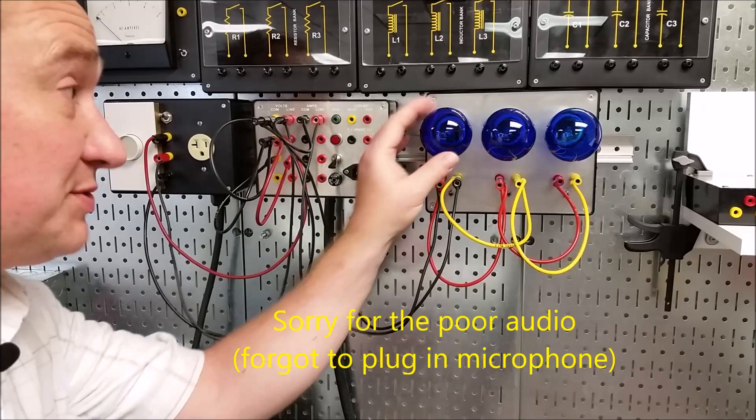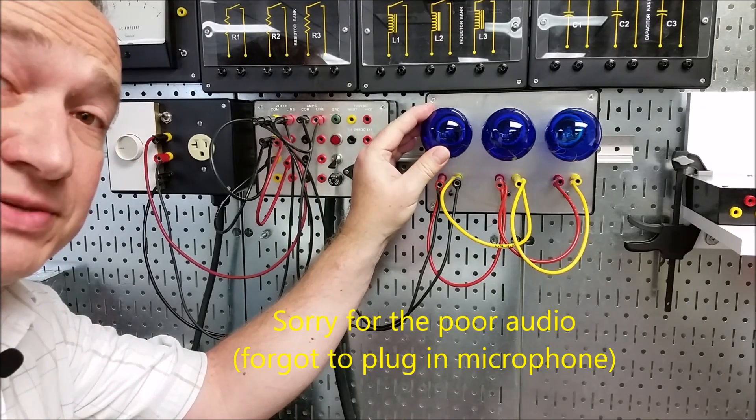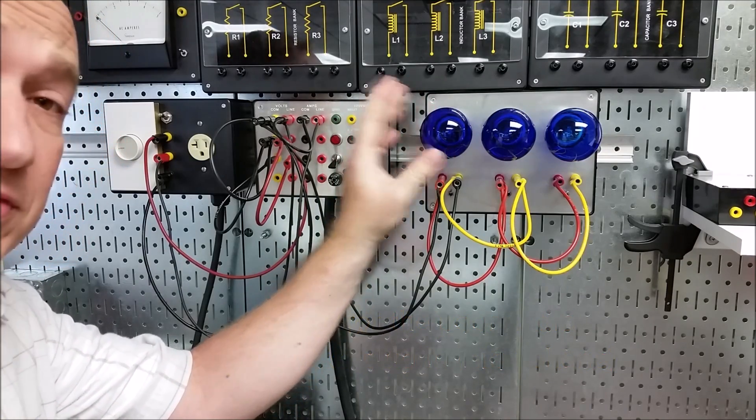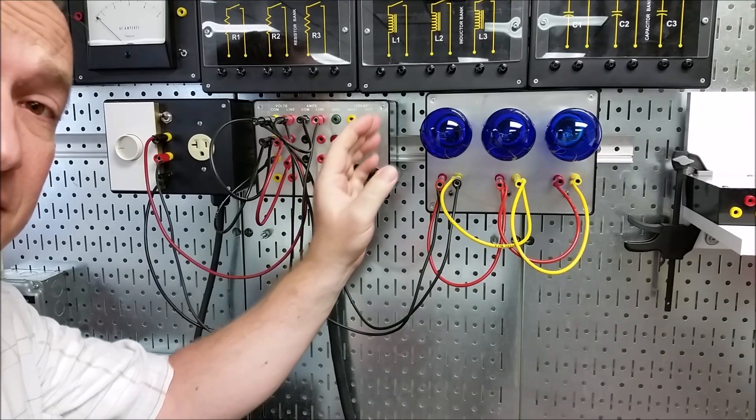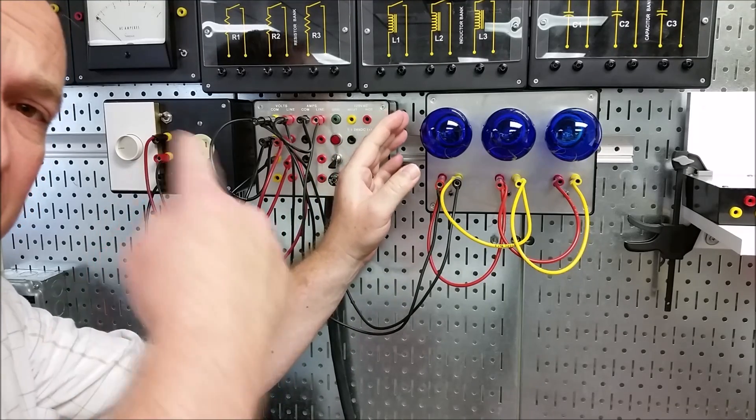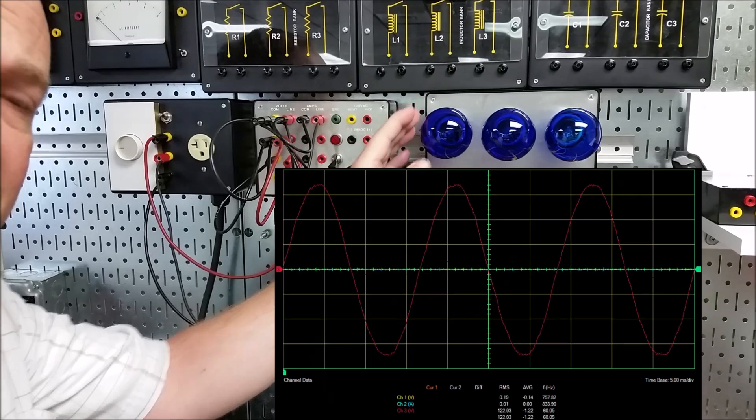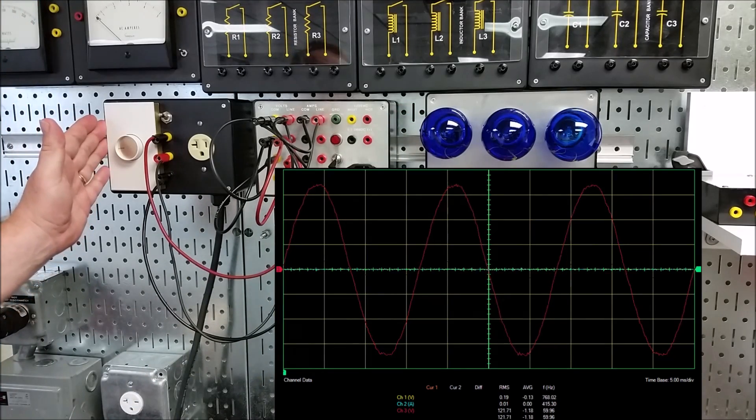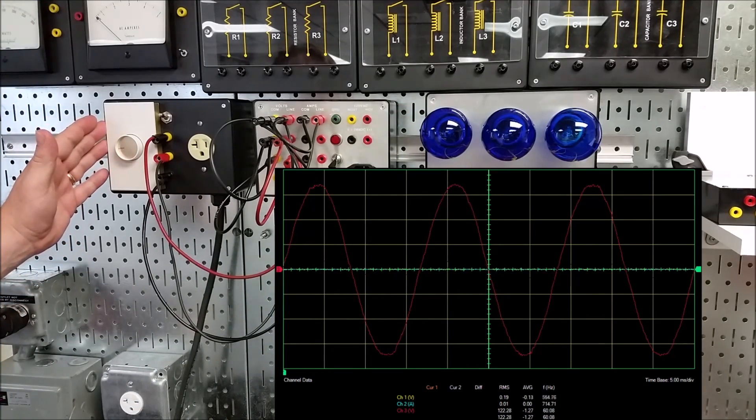All right, note that we swapped out the light bulbs for something that's a lot easier on the eyes. And if you take a look at the oscilloscope trace you'll see the input sine wave, the 120 volts AC that we're feeding to the line side of the dimmer. And it's a fairly smooth sine wave.